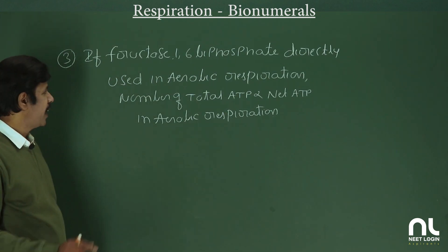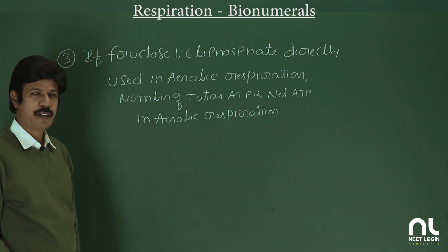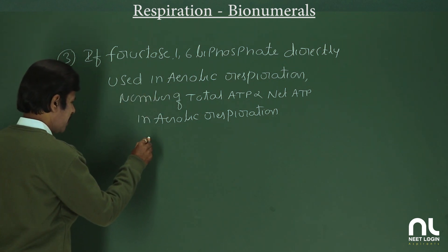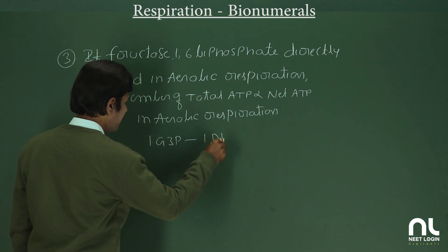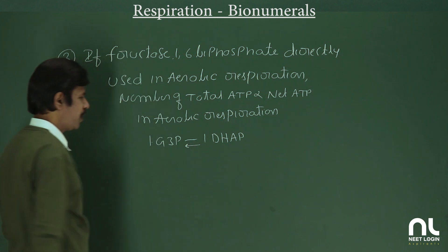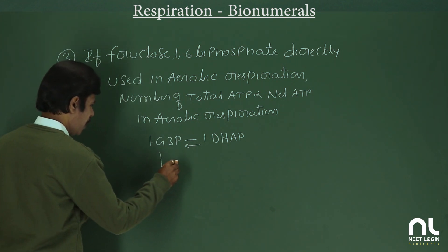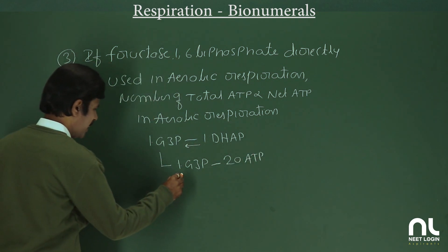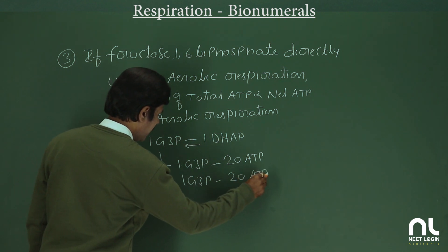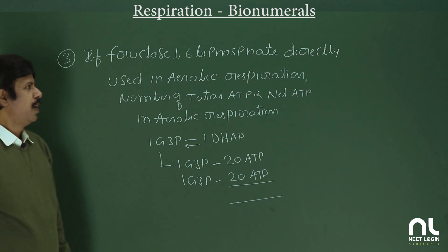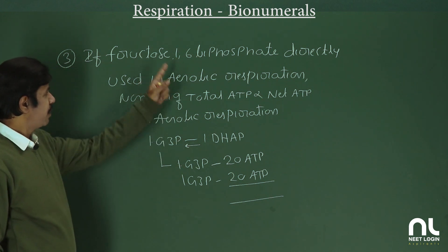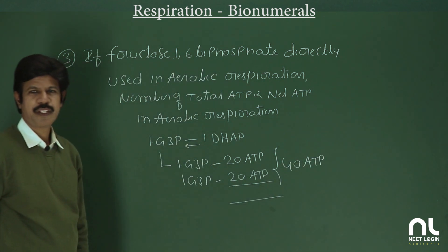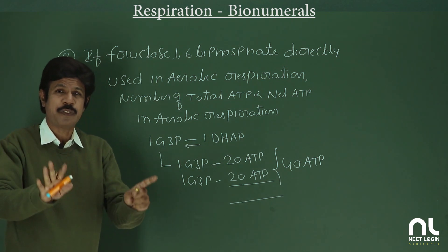Third question: if fructose 1,6-bisphosphate is directly used in aerobic respiration, what is the total and net number of ATP? Fructose 1,6-bisphosphate splits into 1 G3P and 1 DHAP, which is isomerized to another G3P. So for each G3P, 20 ATP are formed — and for the other G3P, another 20 ATP — yielding 40 ATP from 2 G3P.